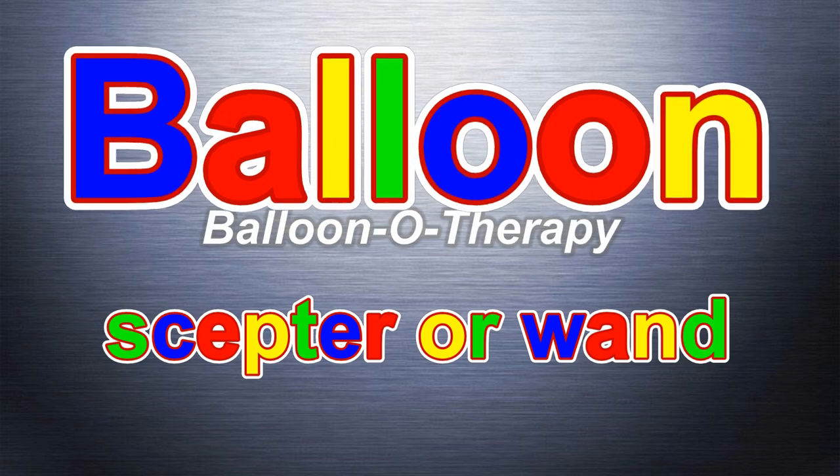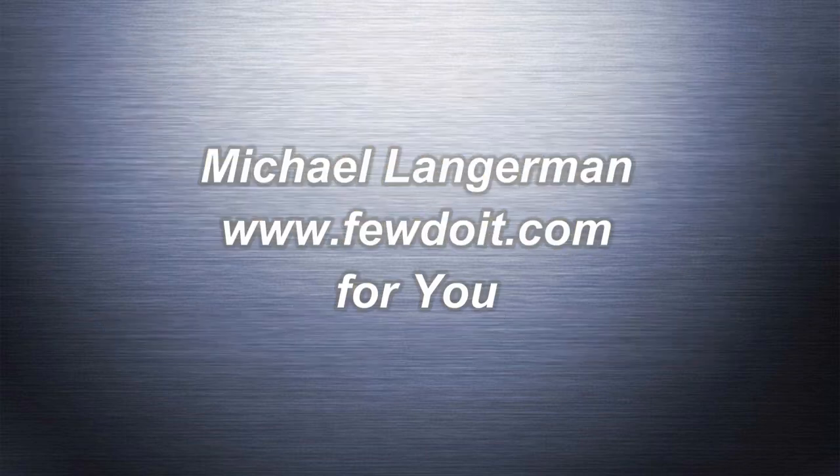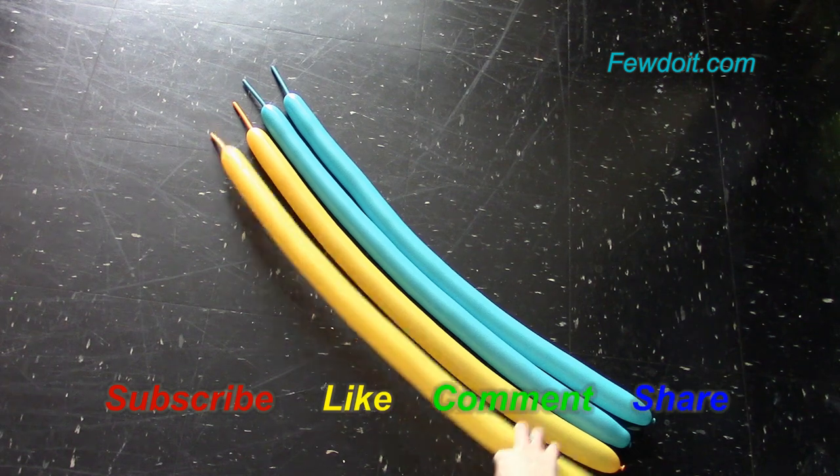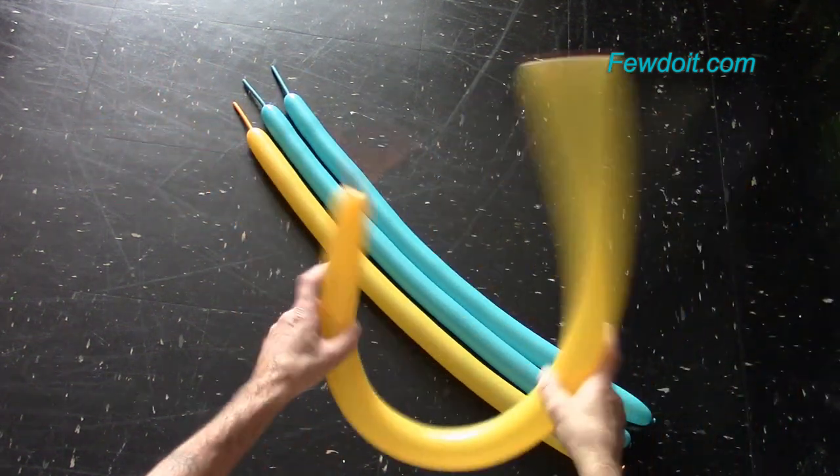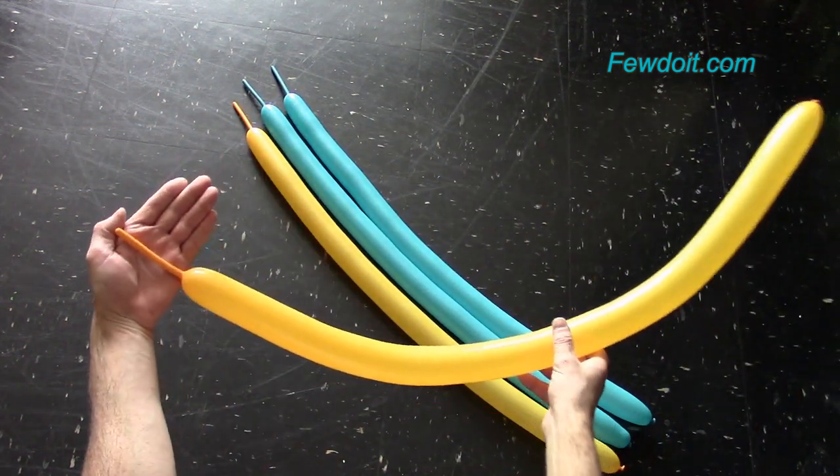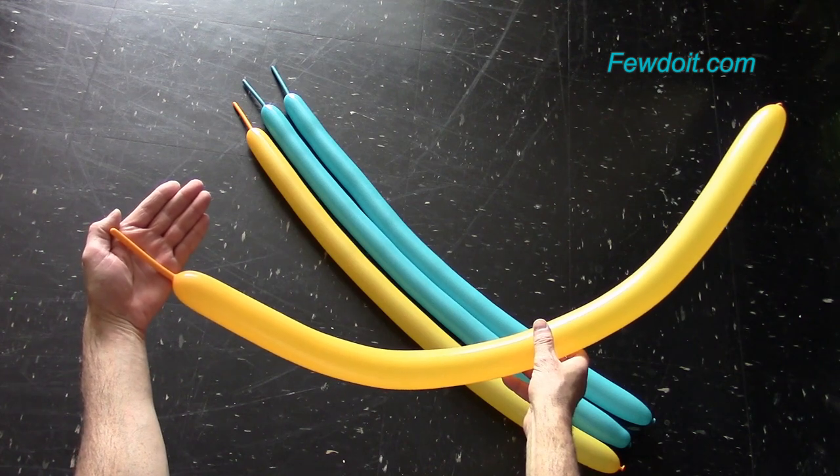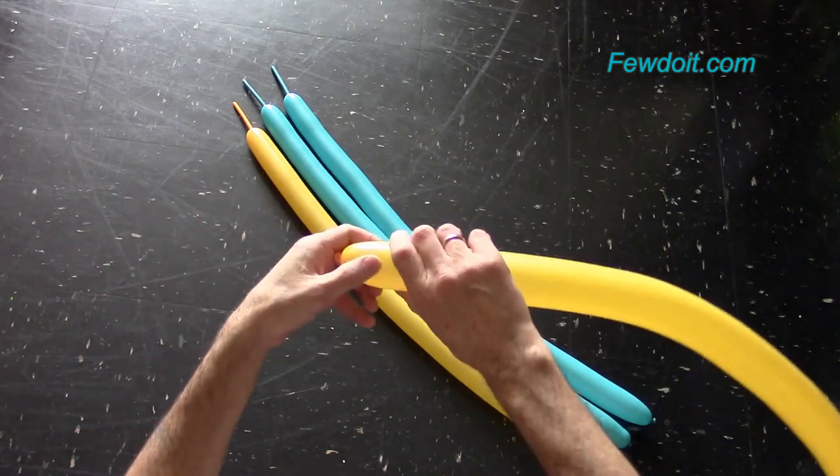Hello everybody. Today we are going to make a balloon scepter or balloon wand. Inflate 4 balloons leaving about 9 cm flat tails. In this example I am going to use 2 yellow and 2 blue balloons.